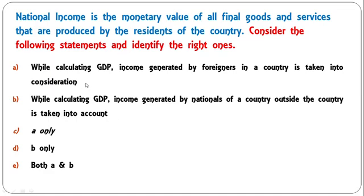Consider the following statements and identify the right ones. While calculating GDP, income generated by foreigners in a country is taken into consideration — A only, B only, or both A and B? The correct statement is A only: while calculating GDP, the income generated by foreigners within the country is included, whereas income generated by nationals outside the country is not included — that is adjusted when we calculate GNP. So A only is the correct answer.